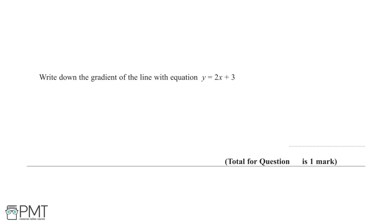We are asked to write the gradient of the line y = 2x + 3 for one mark. This is in the form y = mx + c, where m is the gradient. So m = 2, and the gradient is 2. You get one mark for the correct final answer.